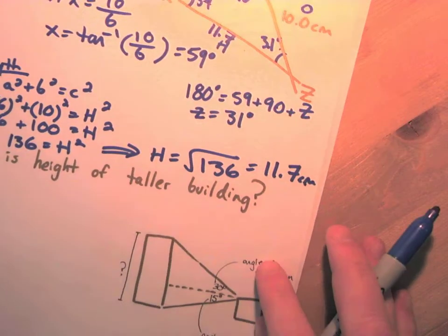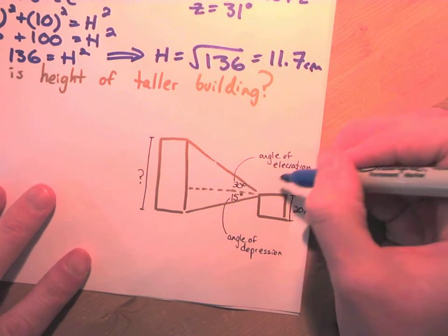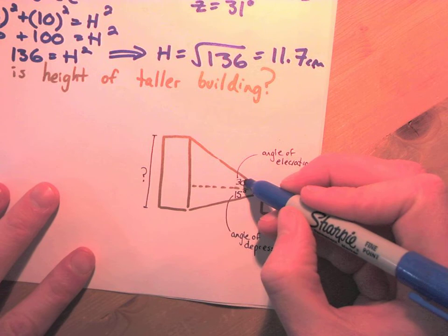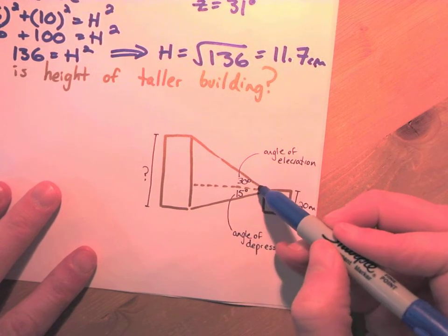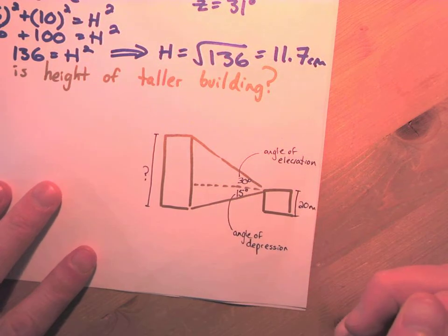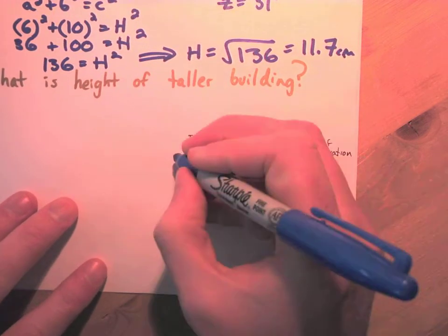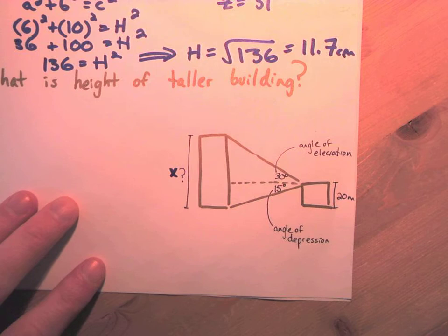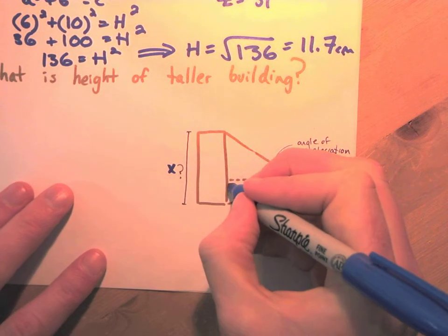What is the height of a taller building? This is a classic problem: you have two buildings — a skyscraper and a smaller one. There's an angle of elevation (from horizontal upward) of 30 degrees and an angle of depression (from horizontal downward) of 15 degrees. The height of the smaller building is 20 meters. We need to find the height of the taller building.